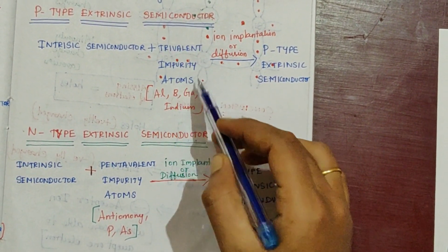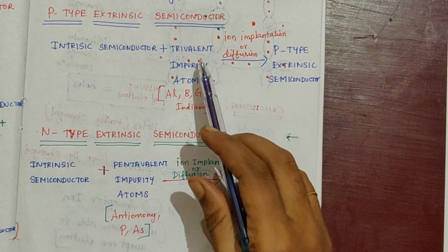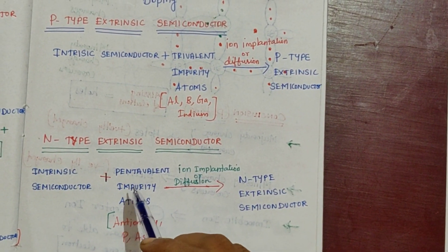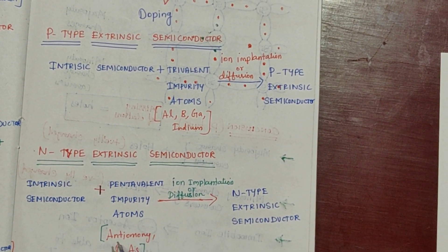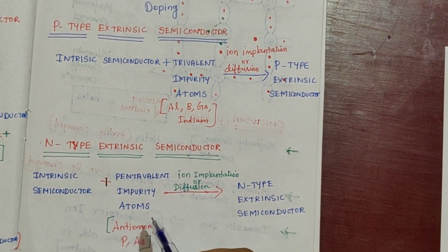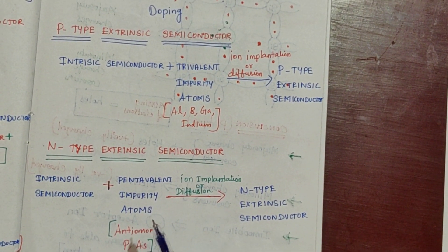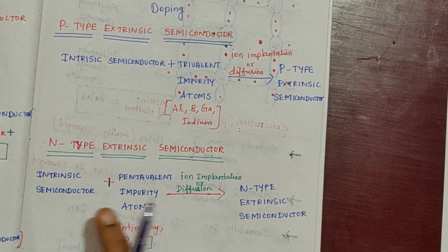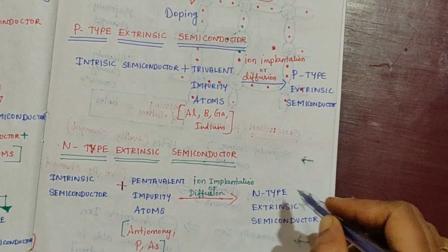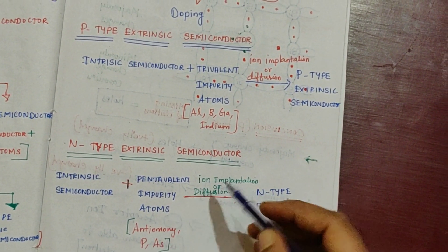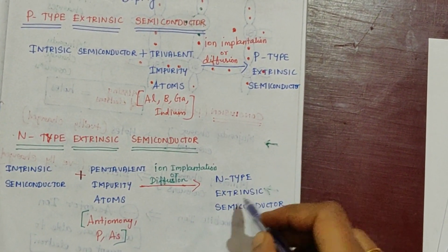Pentavalent means five. Examples of pentavalent impurity: antimony, phosphorus, arsenic. In this atom, the valence band has exactly five electrons. This pentavalent impurity atom is added to intrinsic semiconductor to give a new type of extrinsic semiconductor — N-type extrinsic semiconductor. The same processes of ion implantation or diffusion are involved.